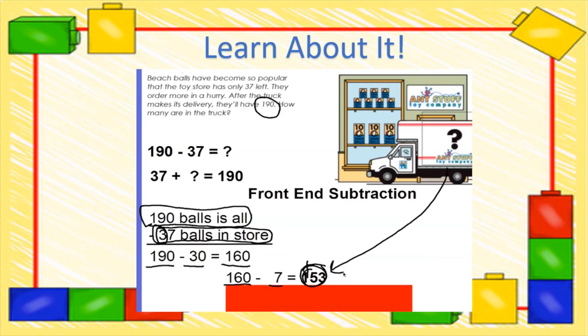So those are three strategies that you can use to subtract problems when you see a story problem that involves subtraction. Remember, you can do it in two different ways. You have three strategies, but you can do it in two different ways. You can have a subtraction problem where you find out what's missing or you can do addition by starting with a number and counting up to the number that you have at the end.